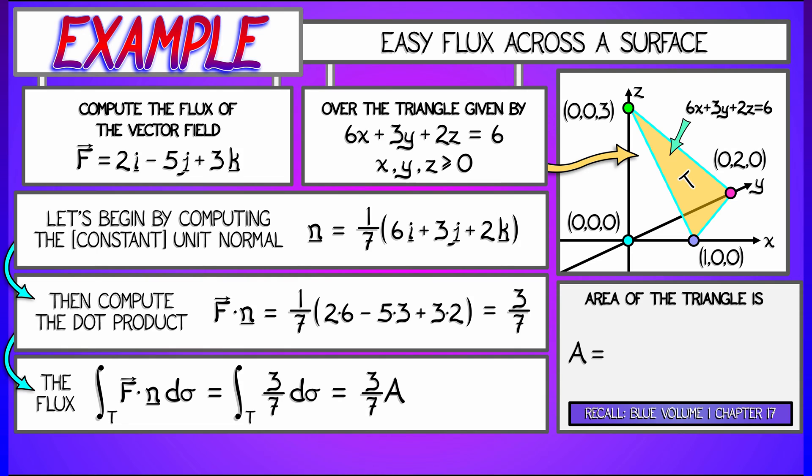You may recall back from volume 1 that there's a simple way to do this by choosing some vertex, let's say (1, 0, 0), looking at the two vectors emanating from that vertex that define the other points of the triangle, taking the cross product of those two vectors, that is (-1, 2, 0) cross (-1, 0, 3), taking the length of that cross product, dividing by 2 to get the area of that triangle. It's half the area of the parallelogram.